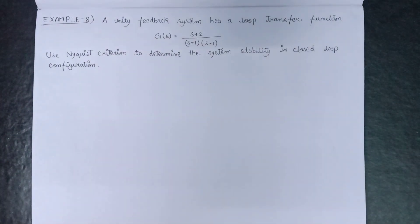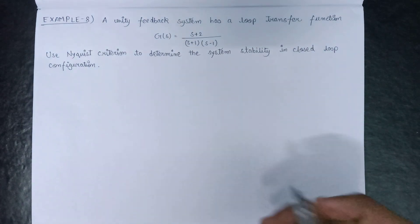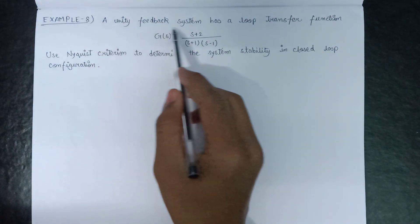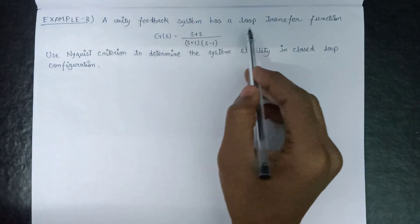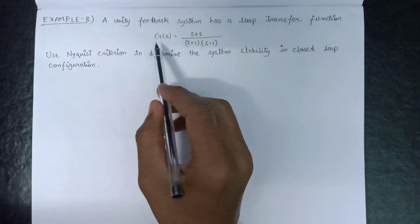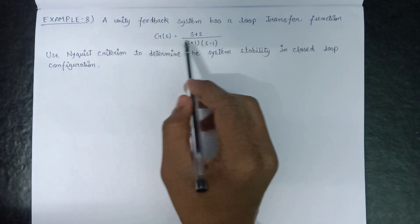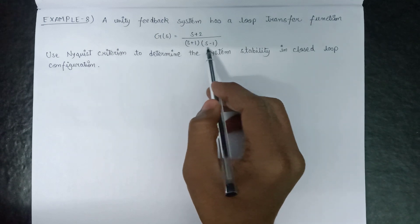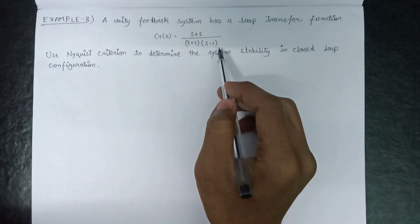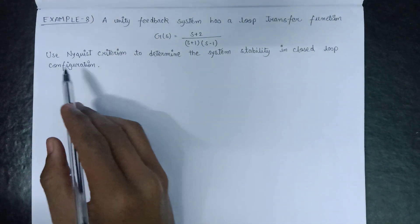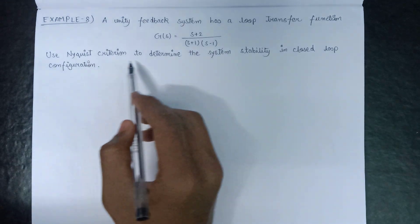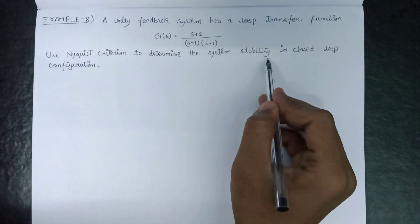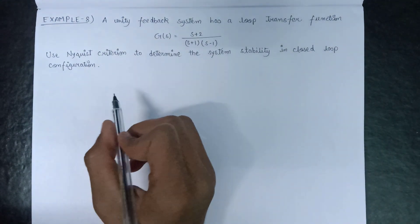Welcome all. In this lecture, we are going to solve an example based on Nyquist criteria. A unity feedback system has a loop transfer function given as G(s) = (s + 2) / [(s + 1)(s - 1)]. We need to use the Nyquist criteria to determine the system stability in the closed loop configuration.